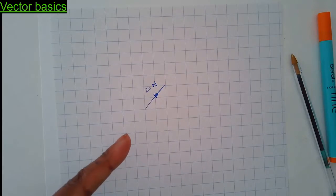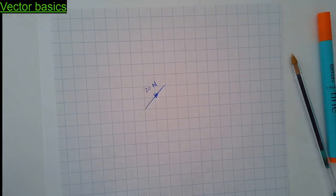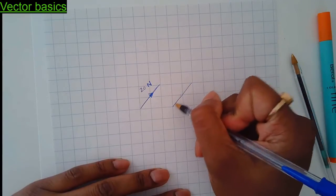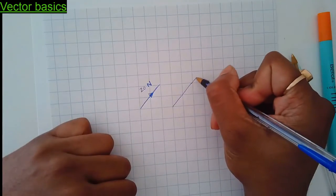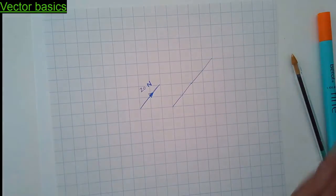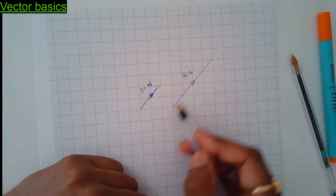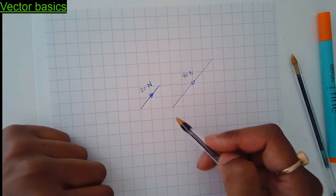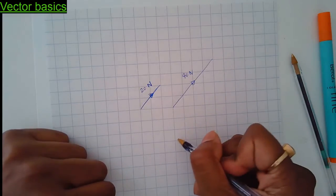If I wanted to kick the ball in the same direction but with double the force, it wouldn't be the same arrow — it'd be double the size. So 40 newtons in that direction: same direction but double that original vector.